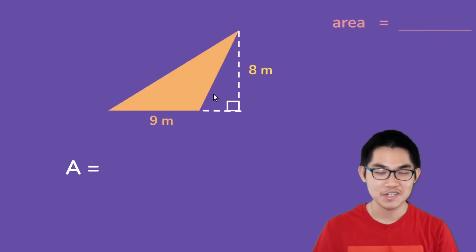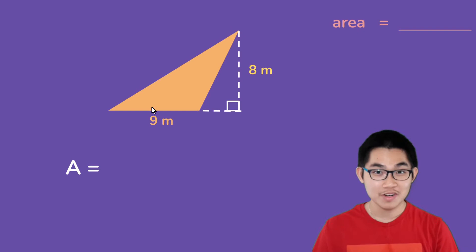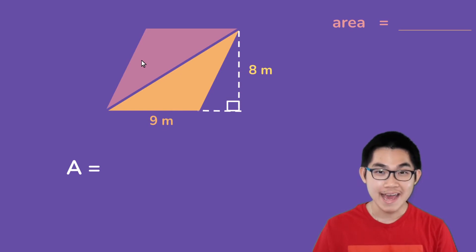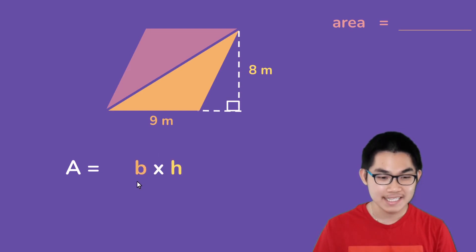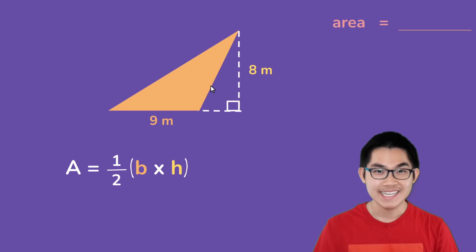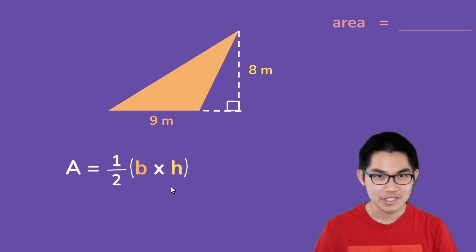How about this triangle? What is the area of the orange triangle? Well, first of all, this is also an oblique triangle because the corners are not 90 degree angles. Now, if I duplicate this triangle, I have a parallelogram. And the area for the parallelogram is the base times the height, where this is the base and this is the height. But we want the area of the orange triangle, which is half the area of the parallelogram, and so the area for the orange triangle is 1 over 2 times the base times the height.